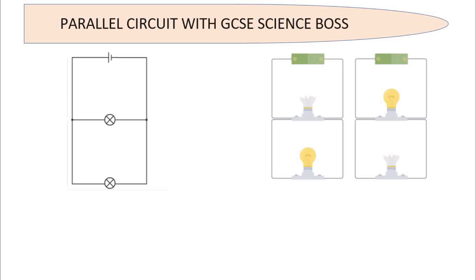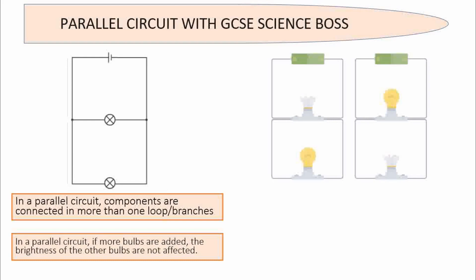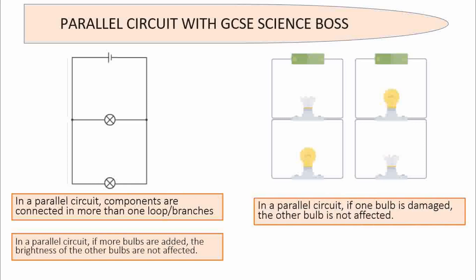Let's go through some parallel circuit with GCSE Science Boss. In a parallel circuit, the components are connected in more than one loop or more than one branch. A key point to put on your flash card: if you add a bulb to a parallel circuit, the other bulb is not affected in terms of its brightness. And most importantly, if one bulb breaks, the other one is still not affected — it's still shining bright.